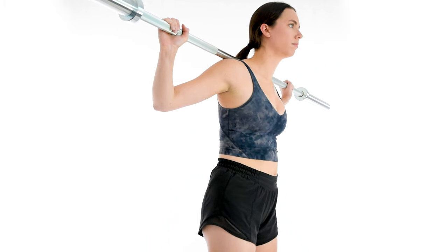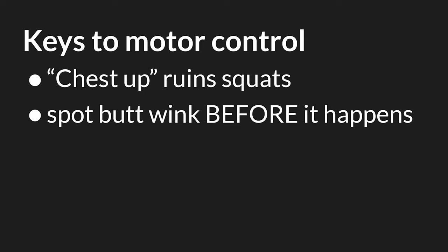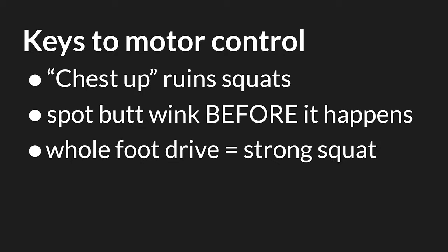When a lifter doesn't know how to stabilize in a roughly neutral spinal position, they accentuate their curve and increase compression with the paraspinal muscles. This muscular activity locks down the spine and only gets worse when beginning the squat. So when a lifter sets up with an extended back posture, it's very likely that they will have a butt wink at the bottom of their squat.